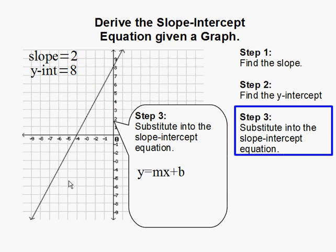So the next step is to simply substitute in the values for m and b, 2 and 8. And this completes our equation, and the slope-intercept equation is y equals 2x plus 8.